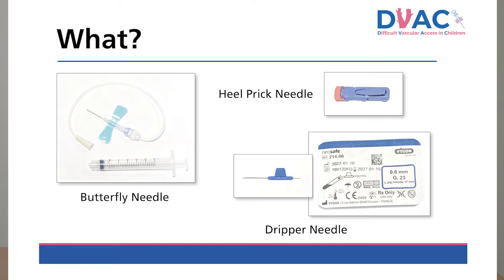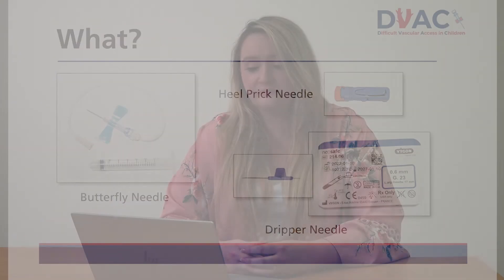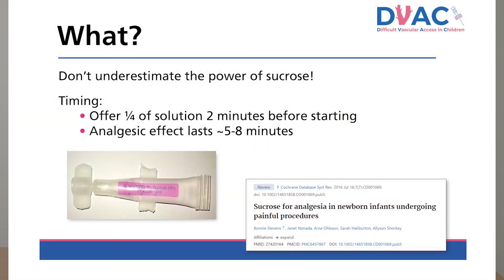Tripper needles are ideal for smaller superficial veins typically found on the back of the hand or feet. Another piece of very underrated equipment is sucrose. A Cochrane review from 2016 found sucrose to be effective at reducing procedural pain for single events such as heel pricks, venipuncture or IM injections in both term and preterm children. But remember, timing is key — sucrose should be offered two minutes before starting a procedure for optimum effect.